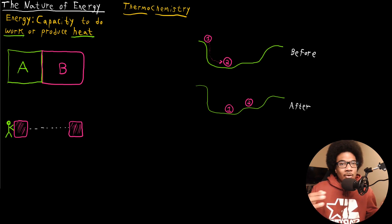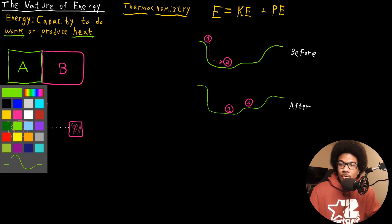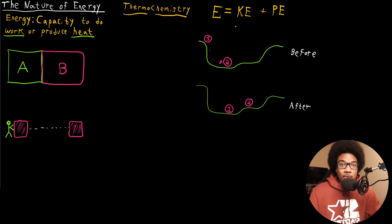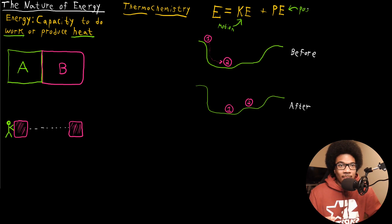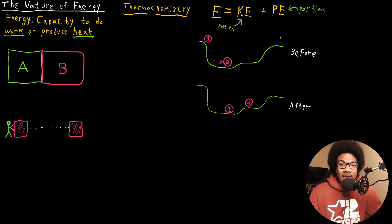Energy can neither be created nor destroyed; it can only be transferred. Energy can be broken down into two components. Using capital E to represent the total energy of a system, it breaks down into kinetic energy (KE) and potential energy (PE). Kinetic energy is the energy associated with motion, while potential energy is the energy associated with position. If you have something at a height, that height relates to its potential energy. An object in motion has kinetic energy, and there's a balance between those two.